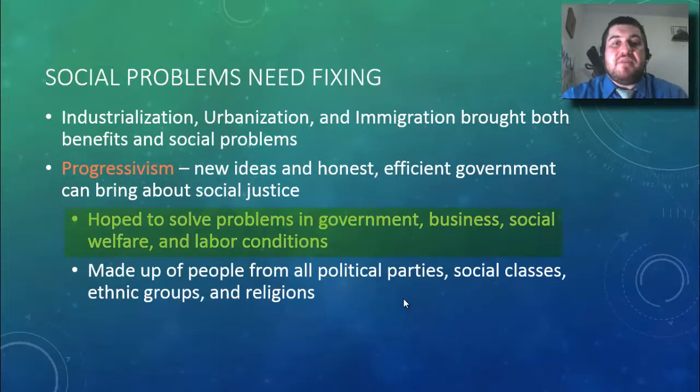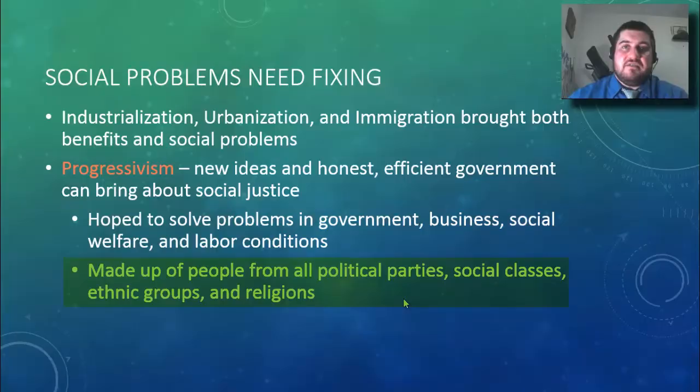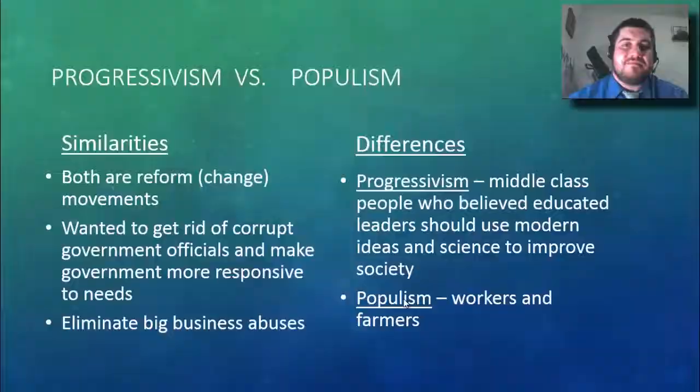Progressivism hopes to solve problems in government, business, social welfare, and labor conditions that need fixing. The main difference from populism is that this movement is made up of people from all political parties, all social classes, all ethnic groups, and all religions — a huge movement happening at the turn of the 1900s.